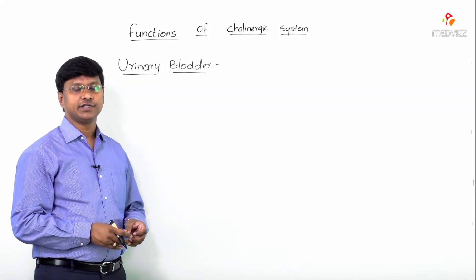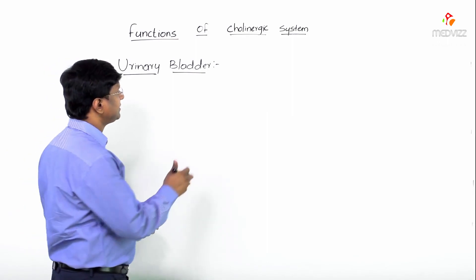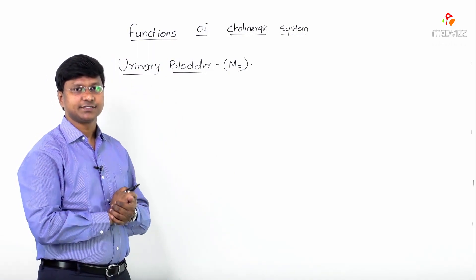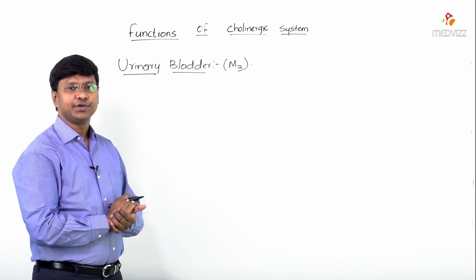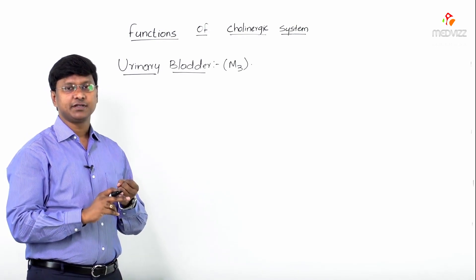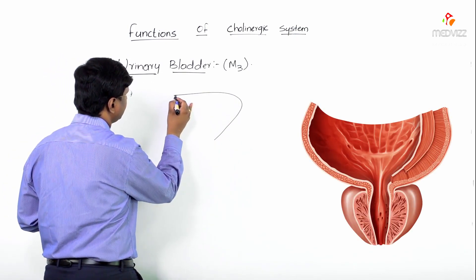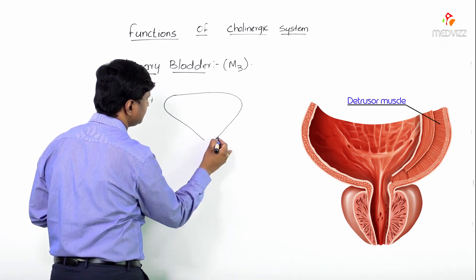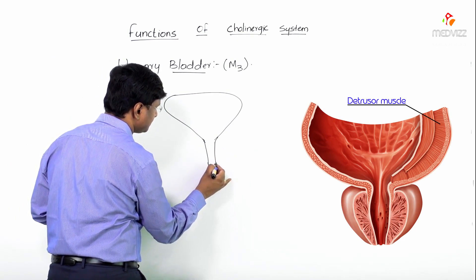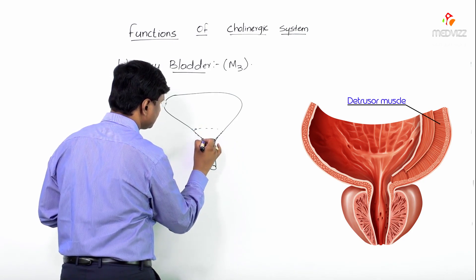Let me discuss the effect of the cholinergic nervous system on the urinary bladder. The cholinergic nervous system acts on the urinary bladder via M3 receptors. The muscle present within the urinary bladder is the detrusor muscle, and the urinary bladder also has a structure called the trigone. So this is the urinary bladder consisting of the detrusor muscle and the trigone of the bladder.